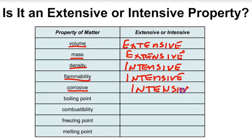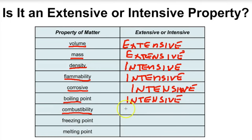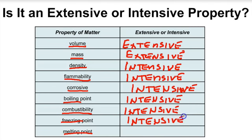Boiling point — water boils at 100 degrees Celsius at sea level regardless of how much you have, so that's intensive. Combustibility — oxygen is combustible regardless of how much you have, so it's intensive. Freezing point and melting point are the same — substances freeze and melt at the same temperature no matter how much you have, so those are intensive as well. Most of these properties are intensive — they don't depend on how much matter you have.